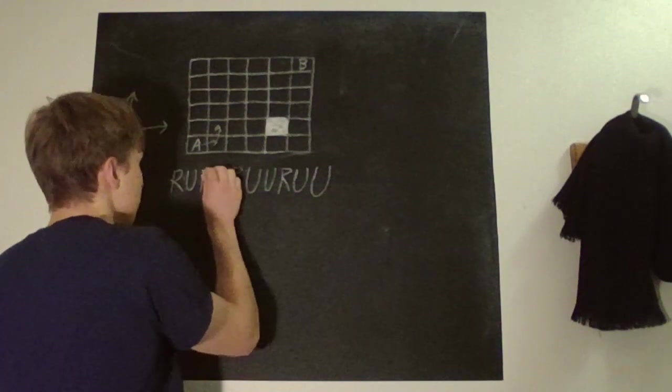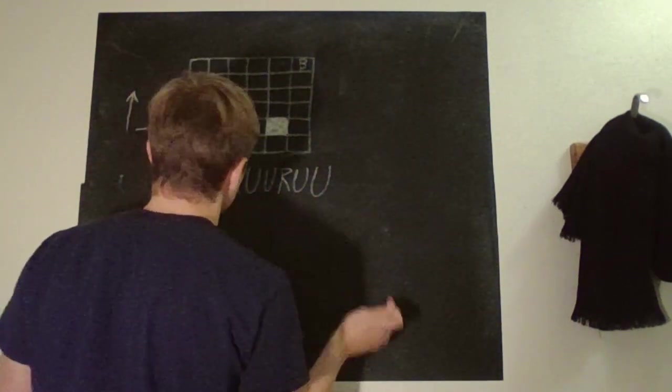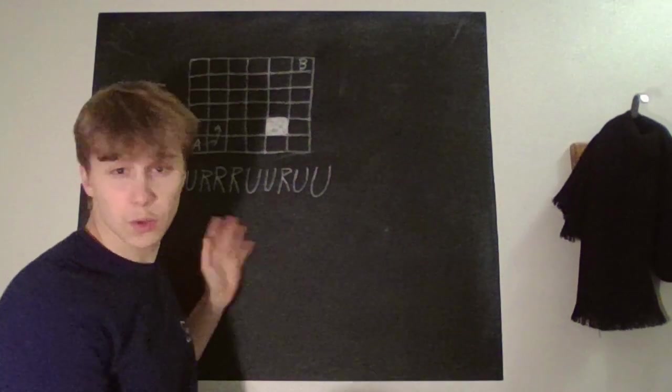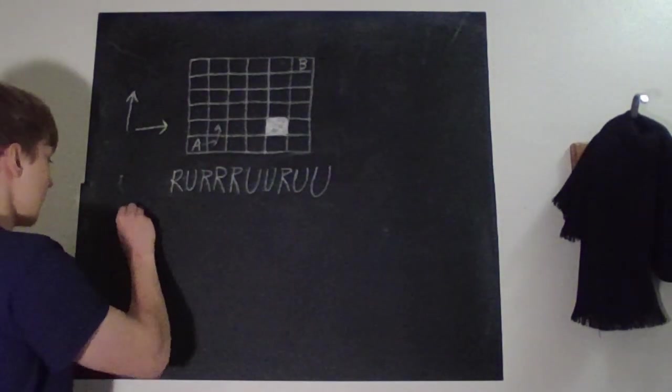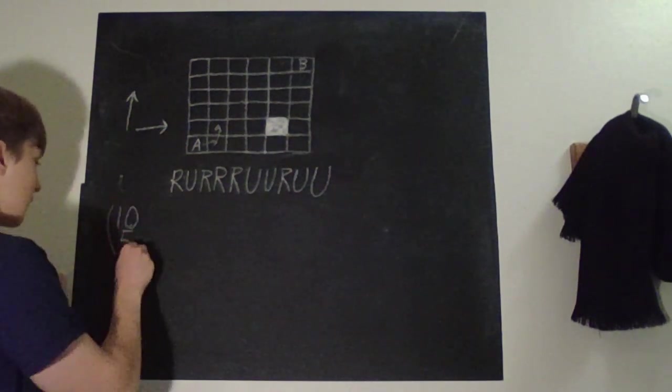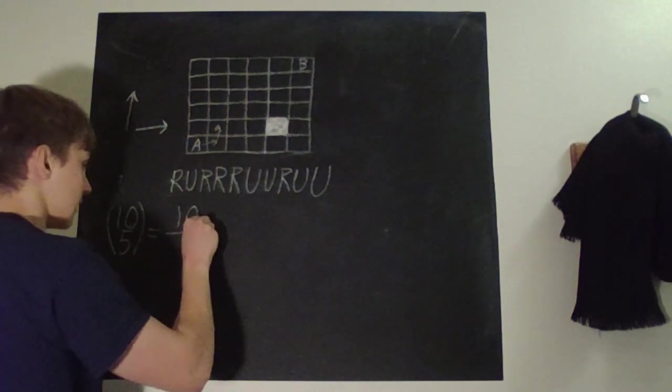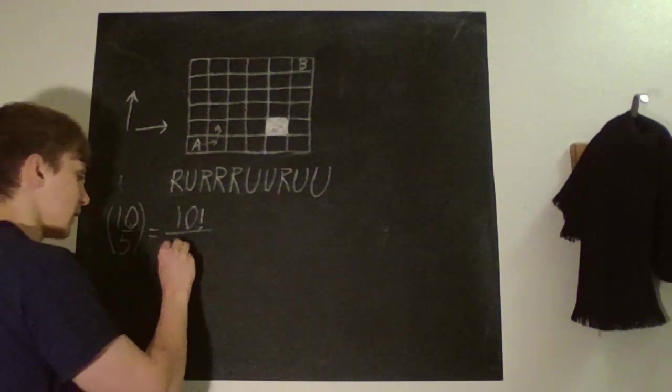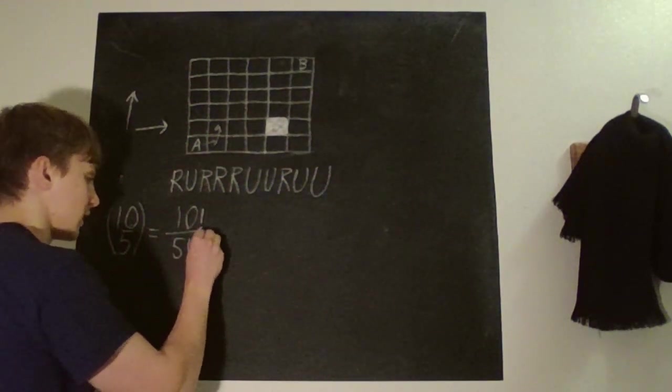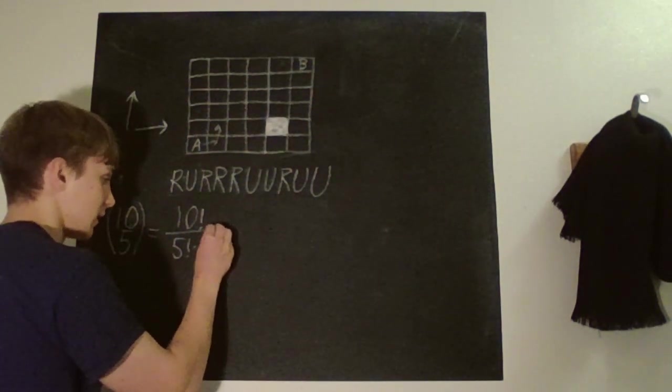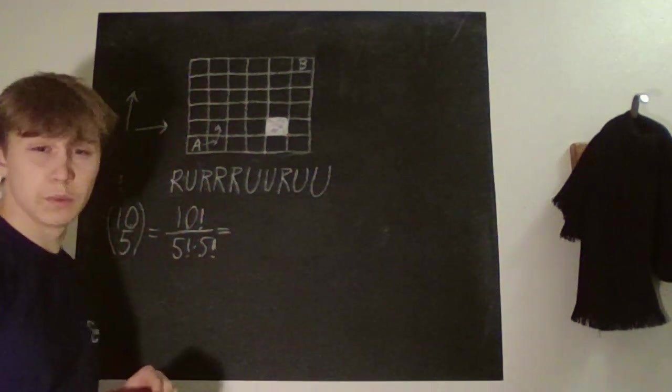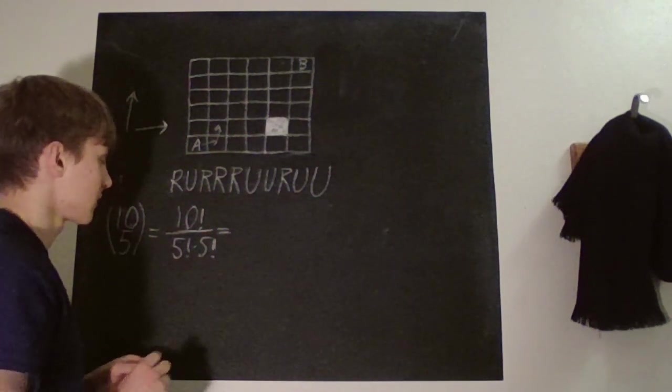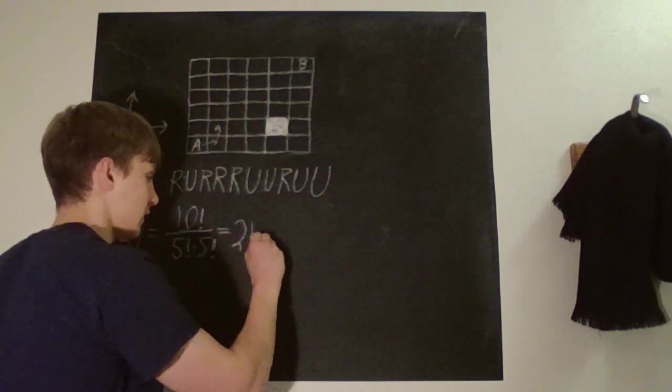And there is no difference between 2 R's and it doesn't matter which we choose first or anything. It's just pure combinations. So if you know your combinatorics, this is 10 over 5. So this is 10 factorial over 10 minus 5 factorial, that's 5 factorial times 5 factorial. And this happens to be 252.